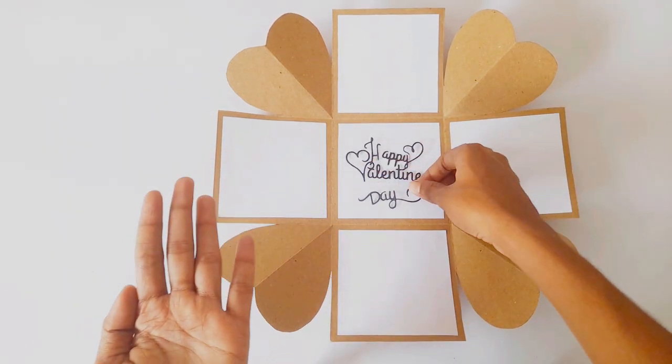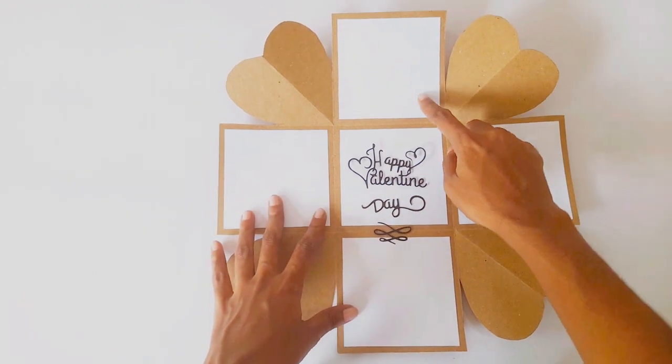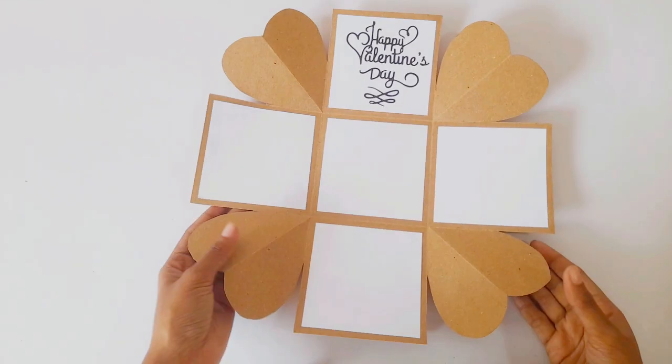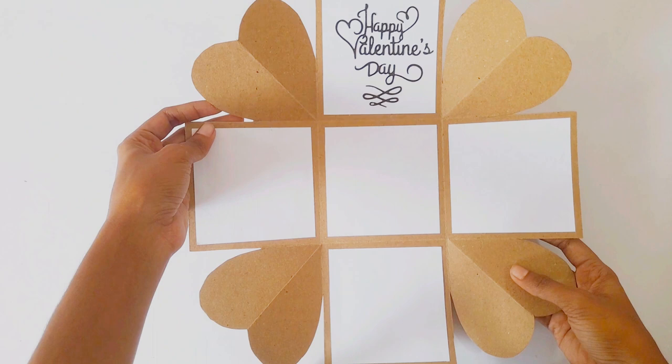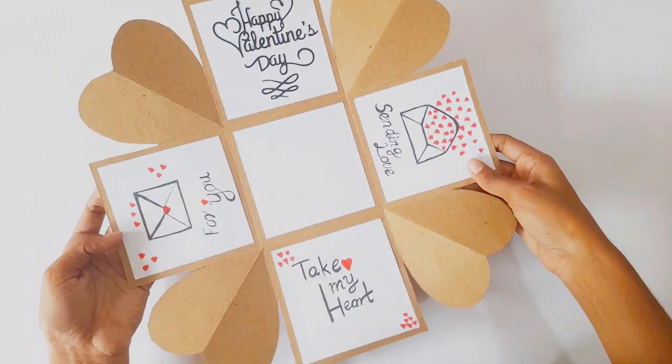So now I take a Valentine die cut and connect it like this. Then I draw some clip arts on here. So I finish the bottom part of the box and it looks like this.